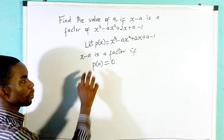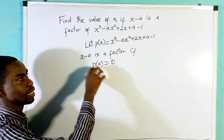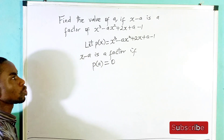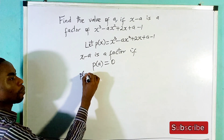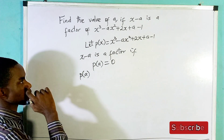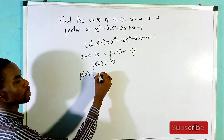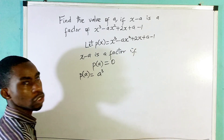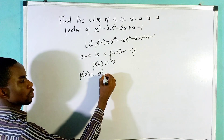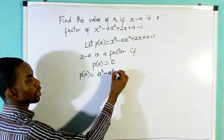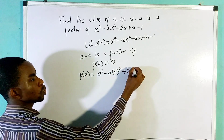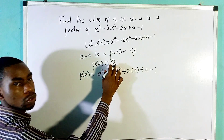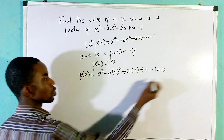When P of a is equal to 0, then it means that x minus a is a factor. And we've already been told that x minus a is a factor. So the next thing we're going to do is find P of a and equate it to 0. P of a means replace every x in the equation with a: a cubed minus a times a squared plus 2 times a plus a minus 1.